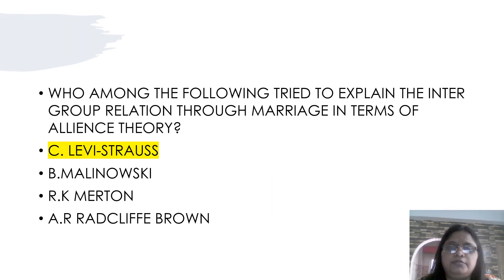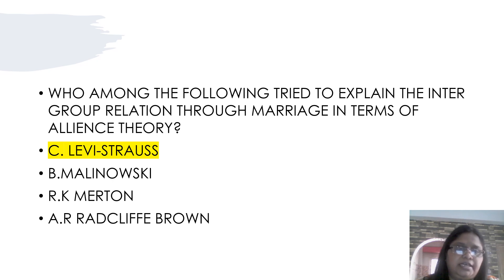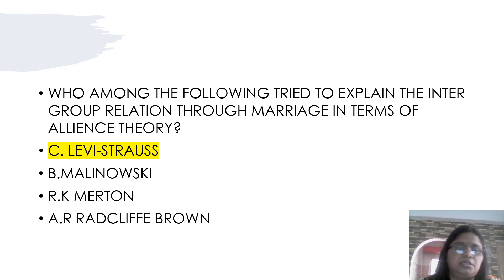Who among the following tried to explain the intergroup relation through marriage in terms of the alliance theory? The alliance theory is called intergroup relation. The answer is C. Lévi-Strauss.